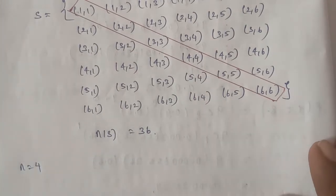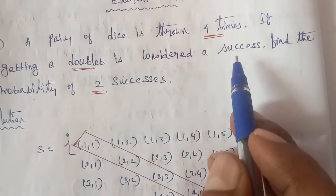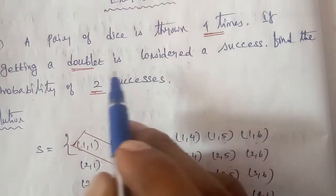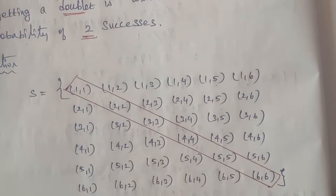And p means the p value. Doublet is considered success. We can consider success as doublets in the given sample space.